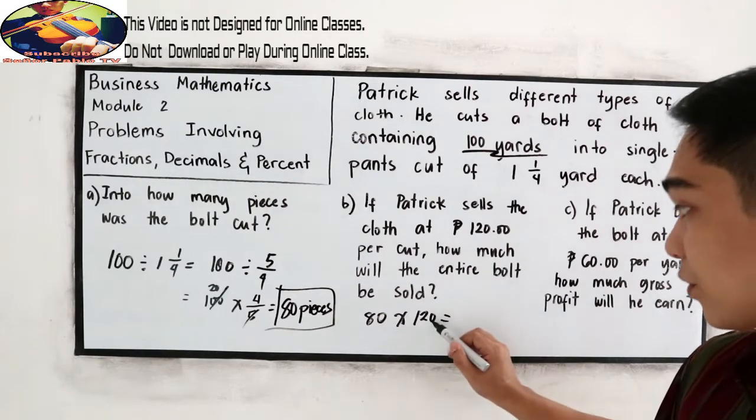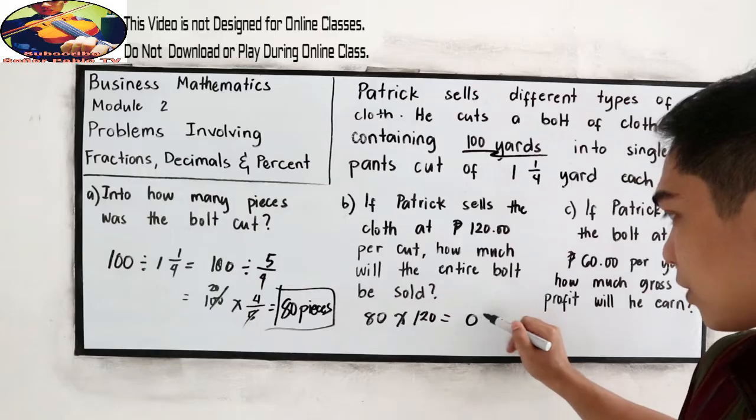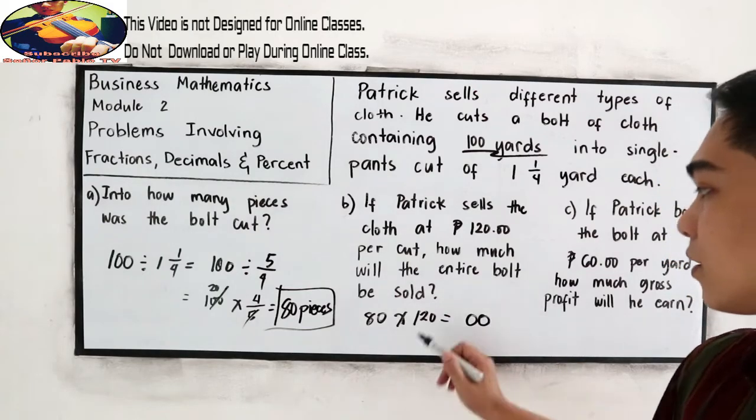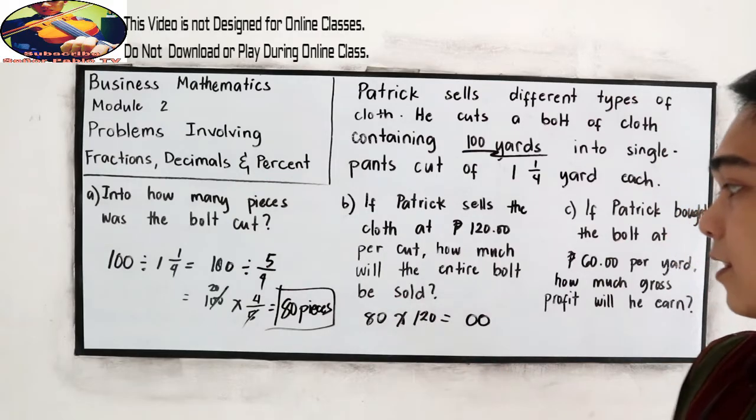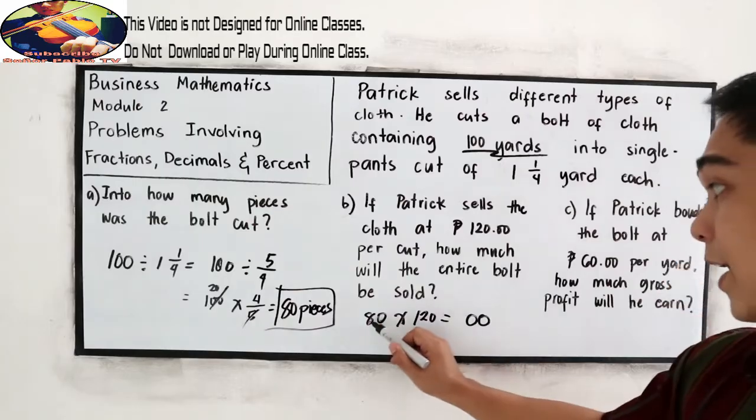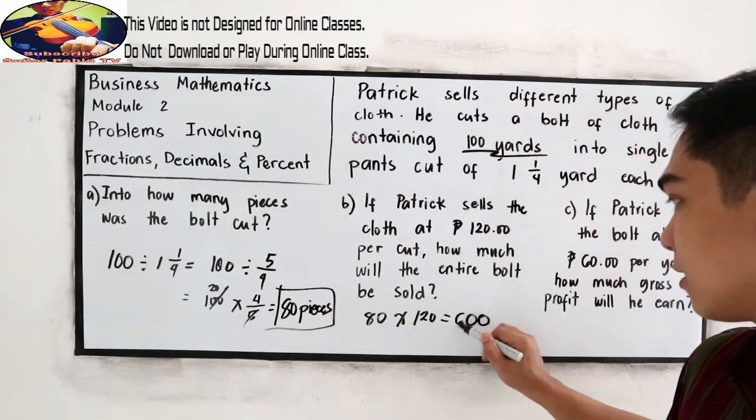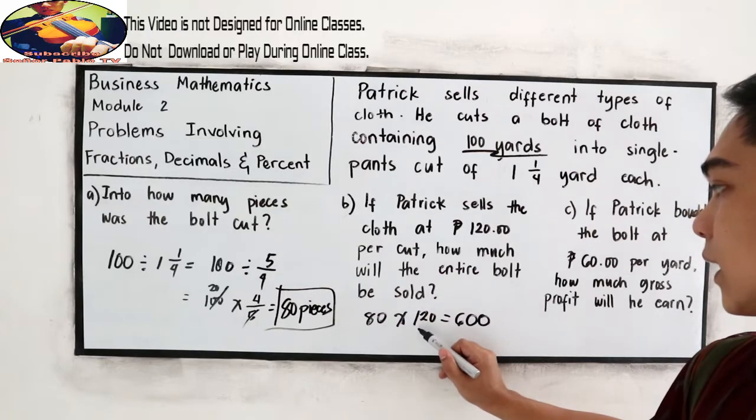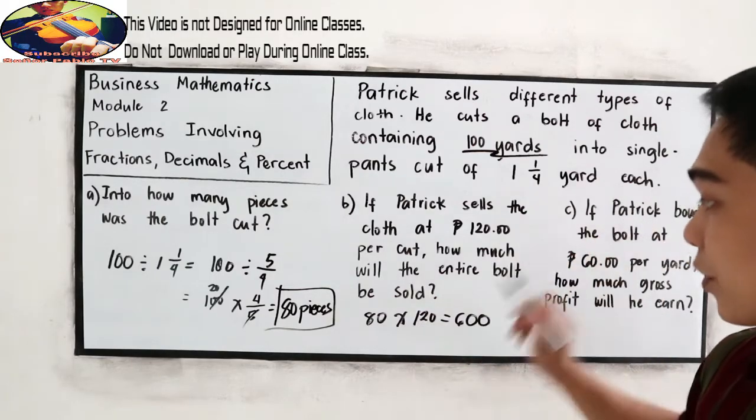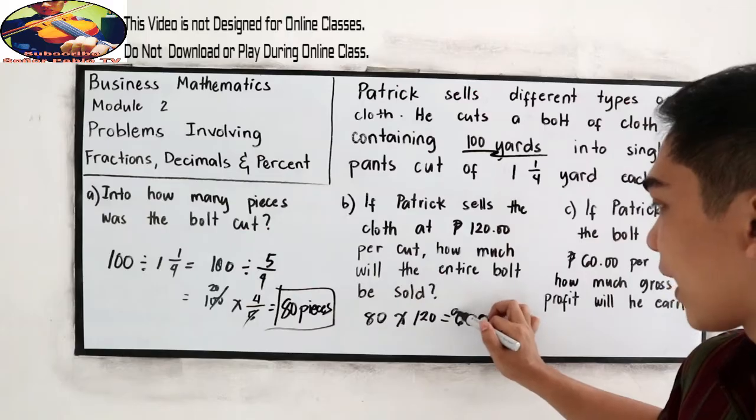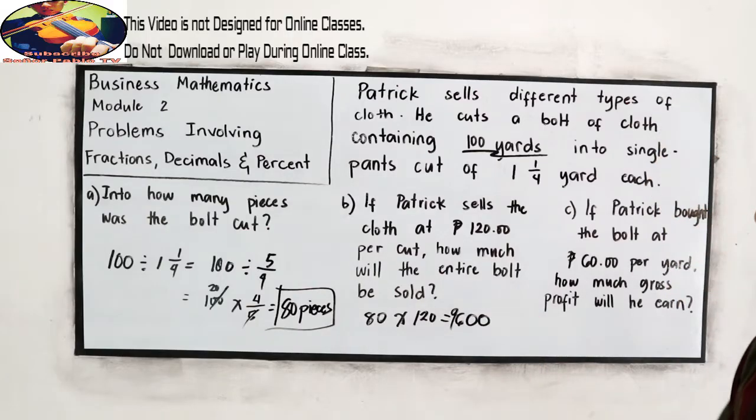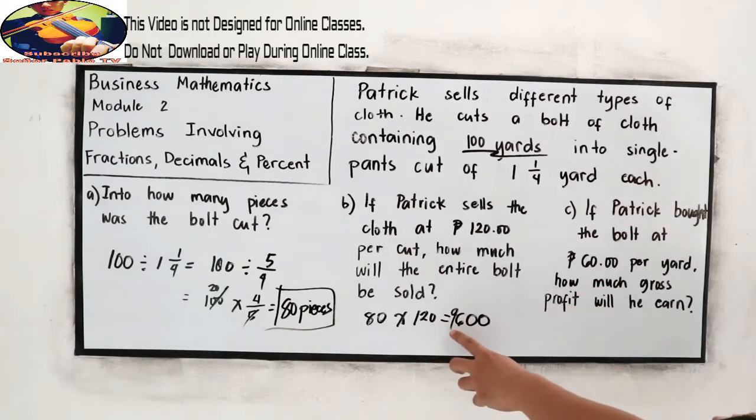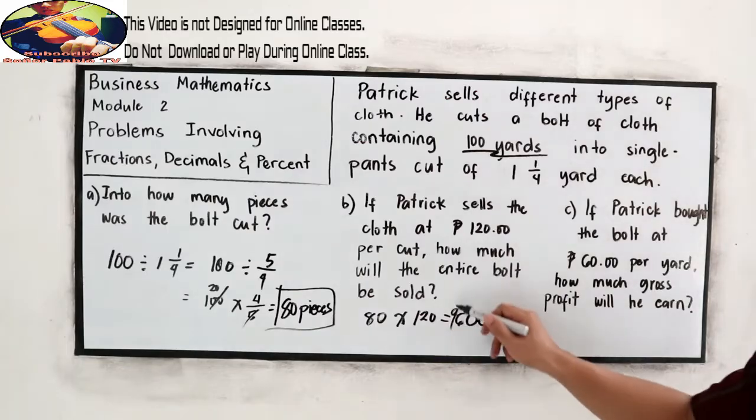We have two zeros. 12 times 8: 8 times 2 is 16, carry 1. 8 times 1 is 8, plus carry 1 becomes 9. So the entire bolt will be sold at 9,600 pesos.